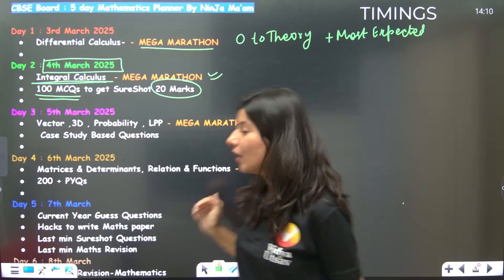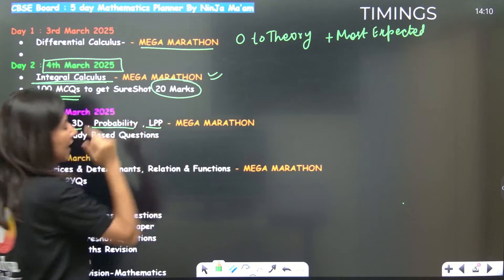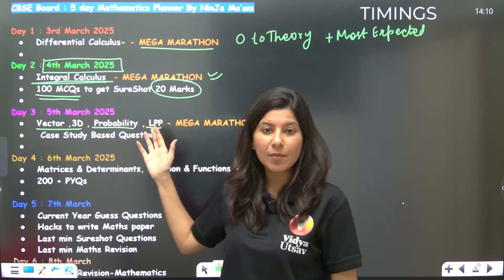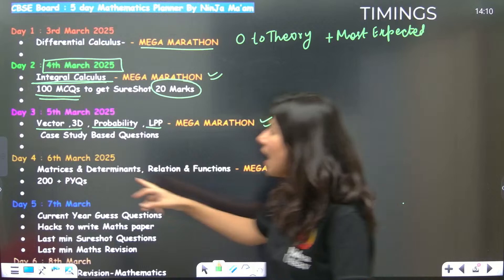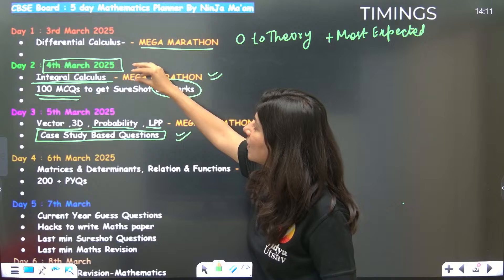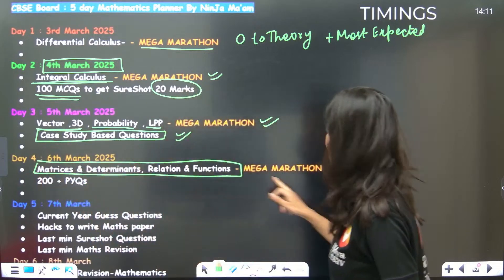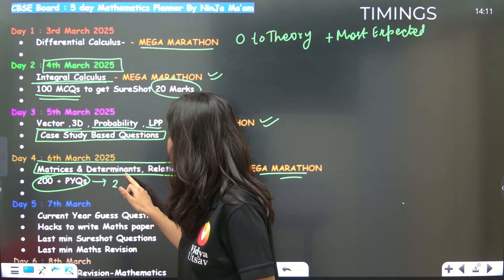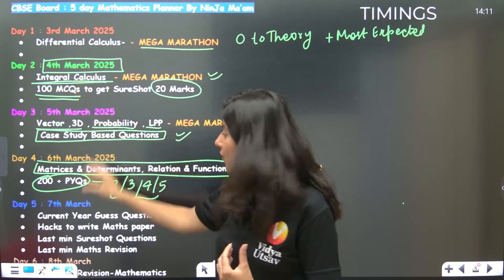On Day 3, 5th March, we cover non-calculus chapters: Vectors, 3D Geometry, Probability, and LPP — four chapters in a morning mega marathon, plus an evening session dedicated to case study-based questions. On Day 4, 6th March, we do Matrices and Determinants, Relations and Functions, and Inverse Trigonometric Functions — mega marathon format. Additionally, 200-plus PYQs targeting 2-mark, 3-mark, 4-mark, and 5-mark questions, since the 1-mark MCQs will have been covered earlier.